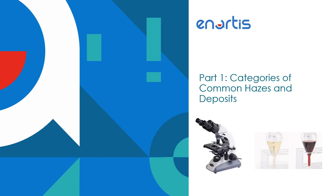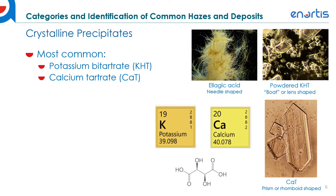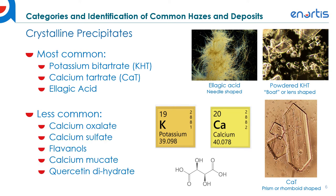Now let's get into part one: categories of common hazes and deposits. Crystalline precipitates — the most common are potassium bitartrate and calcium tartrate. There's also oxalic acid, which has a needle-shaped appearance as shown on the right-hand side. Some less common crystalline precipitates are listed below, but for the most part we're going to be focused on potassium bitartrate and calcium tartrate.